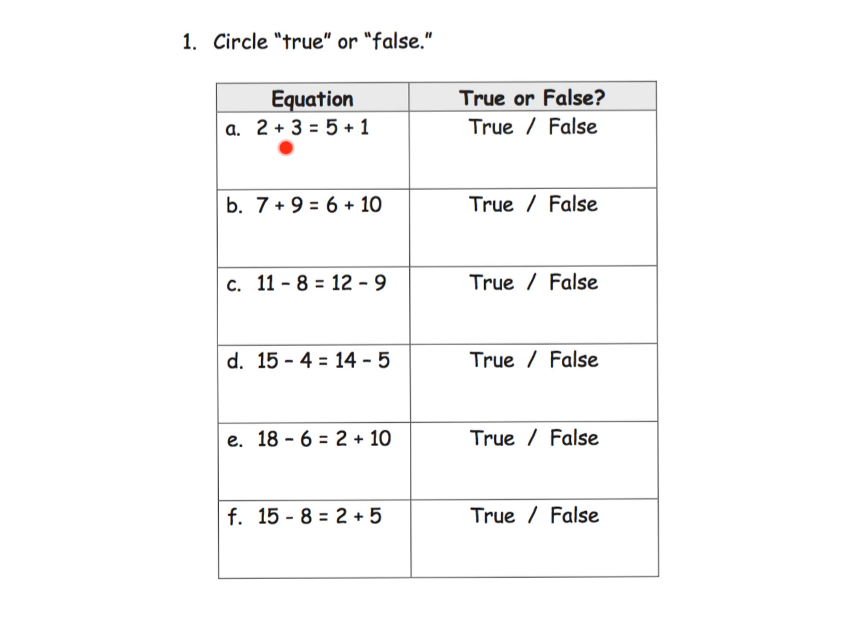So here students are going to look at the equation on either side of the equal sign, and in this case they either add or subtract and then identify whether the two sides are equal. For example, this first one, 2 plus 3, 5.